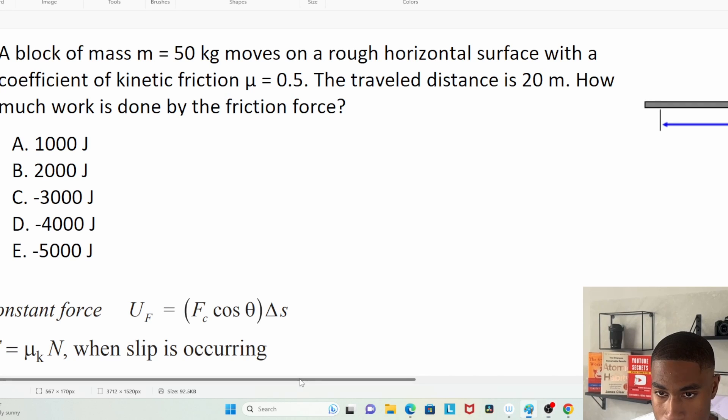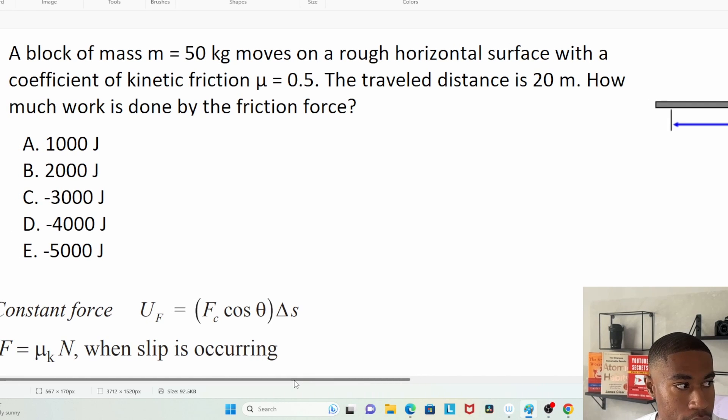Our practice problem says: a block of mass m = 50 kilograms moves on a rough horizontal surface with a coefficient of kinetic friction μ = 0.5. The traveled distance is 20 meters. How much work is done by the friction force?